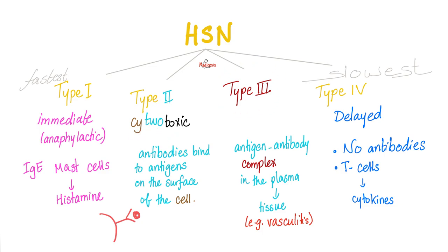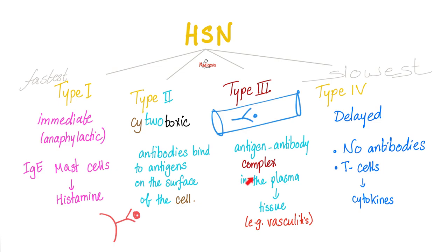How about type 3? Type 3 is free — you have antigen-antibody complexes, same as type 2, but with one big difference: this happens in the blood. Since they are hanging around in the blood, the antigen-antibody complex can end up being deposited in blood vessels causing vasculitis, in your joints causing arthritis, in your kidney causing nephritis, etc.